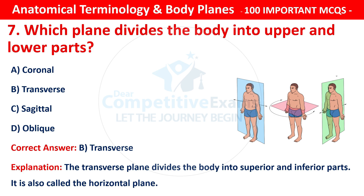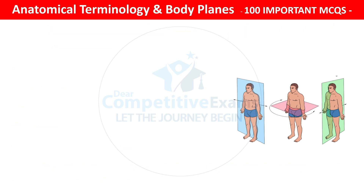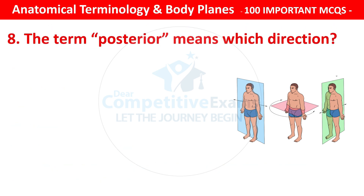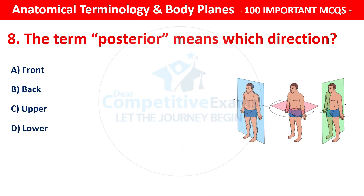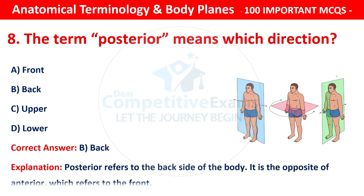Question number 8: The term posterior means which direction? Options are: front, back, upper, or lower. The correct answer is B — that is back. Posterior refers to the back side of the body. It is the opposite of anterior, which refers to the front.